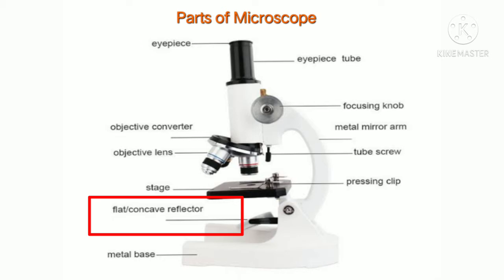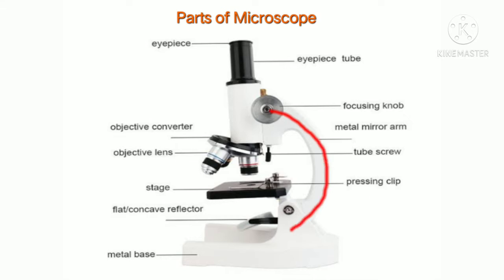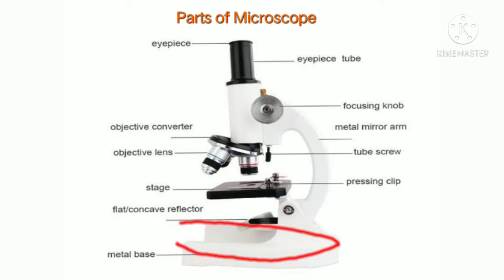Below the stage you also have a condenser that condenses the light, and a flat concave reflector that reflects light into the stage so it passes through the specimen and forms an image. You also have the arm used to hold the microscope and the base on which the microscope is constructed.